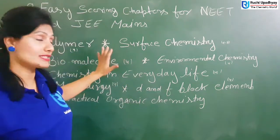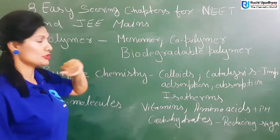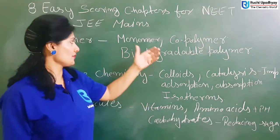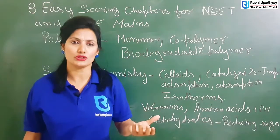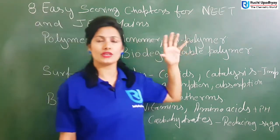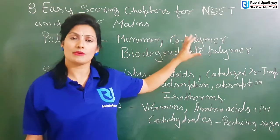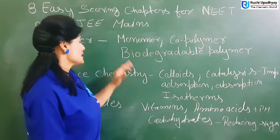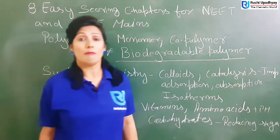So I will tell you the important topics for each chapter. For polymers, the important topics are monomer, co-polymer, and biodegradable polymer. The definition of monomer is very easy — small units of molecules which are part of the formation of a polymer. Co-polymer is very, very important. Co-polymer is a joint polymer, a mixed polymer — it is a polymerization. You will learn about it and practice the whole reaction with examples.